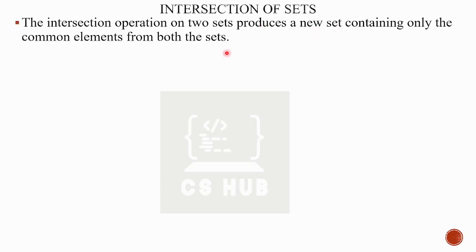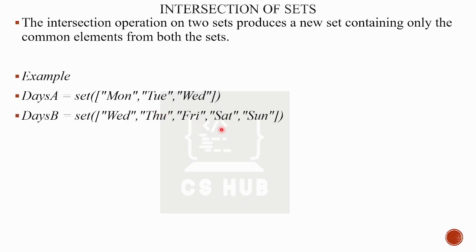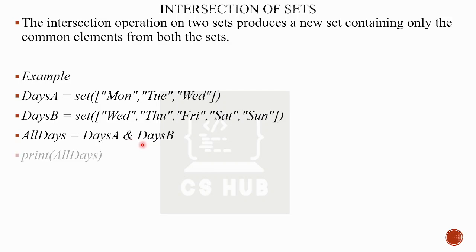Intersection contains only common elements from both sets. The resulting set has only common and clear elements. For example: days_A = {'Monday', 'Tuesday', 'Wednesday'} and days_B = {'Wednesday', 'Thursday', 'Friday', 'Saturday', 'Sunday'}. The common element is Wednesday. The intersection operator is the ampersand symbol: days_A & days_B. The output will print Wednesday.